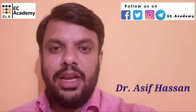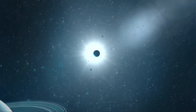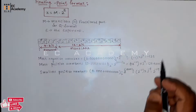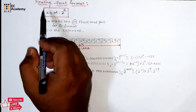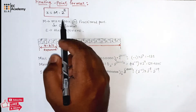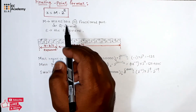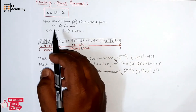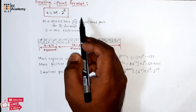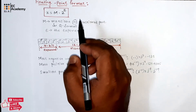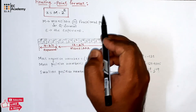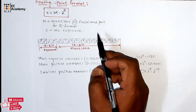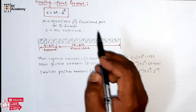Hello friends, welcome to ESEA Academy. In this lecture, let us understand floating point format. In the previous lecture, we understood about fixed point format. When we compare floating point format with fixed point format, the floating point format is used to increase the dynamic range of number representation. Using floating point format, we can increase the dynamic range of the number representation.